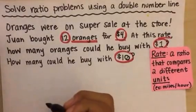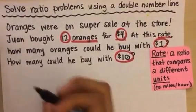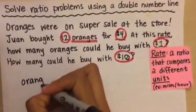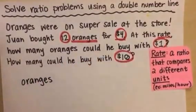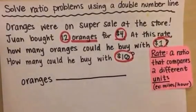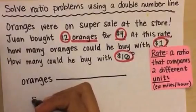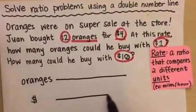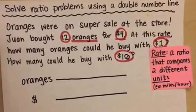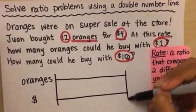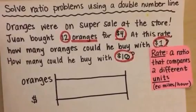When we set up our double number line, first thing we're going to do is write in our units. So we're starting with oranges, and that's going to be our first number line. And we're comparing that in our rate to dollars, which is going to be our second number line.